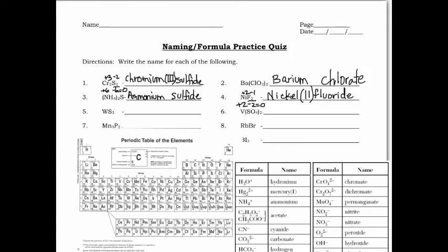Next: W is tungsten, leave a space, another sulfide. We check tungsten in the periodic table — it only has one positive oxidation number even though it's a transition metal, so no Roman numeral needed.